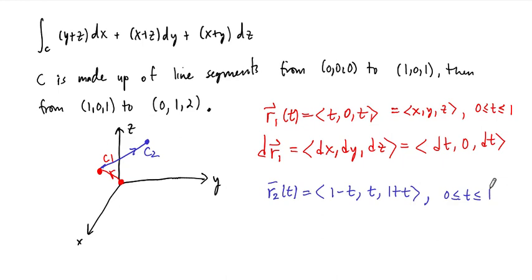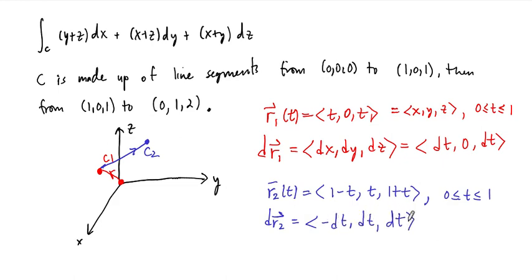We need to treat these two portions of the curve separately. Just like we did with R1, we can compute dr2. This gives dr2 = (−dt, dt, dt) — just take the derivatives. The next step is to rewrite our integral, and we're going to break it up and write it as a sum of two integrals.